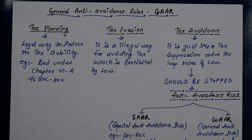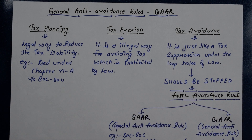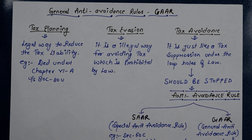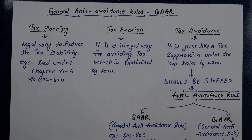People think that when they pay tax on their income, the remaining amount is their real disposable income. Nobody wants to pay more tax than necessary. So people start thinking about tax planning — that is, how to reduce your tax liability through legitimate means.